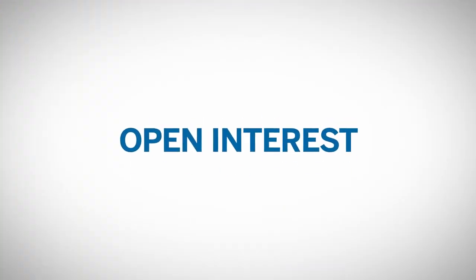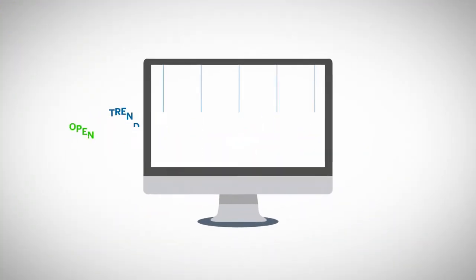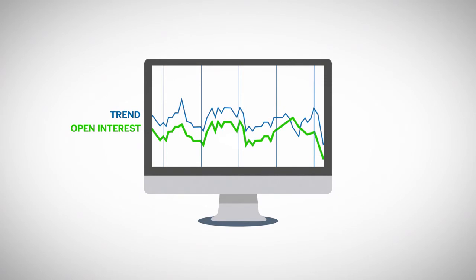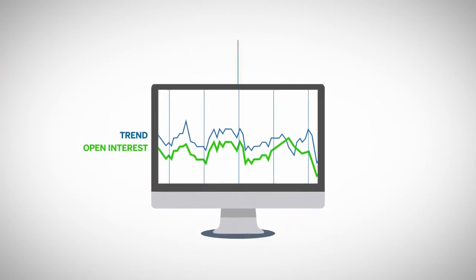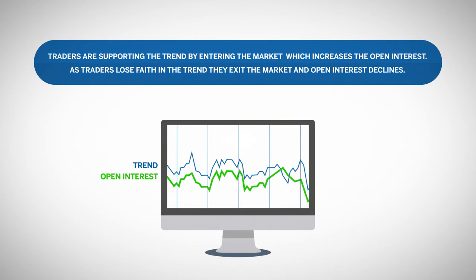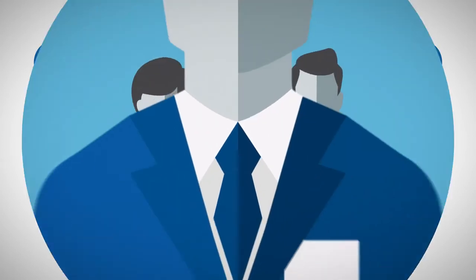Analysts typically use open interest to confirm the strength of a trend. Increasing open interest is typically a confirmation of the trend, whereas decreasing open interest can be a signal that the trend is losing strength. The idea is that traders are supporting the trend by entering the market, which increases open interest. As traders lose faith in the trend, they exit the market and open interest declines.